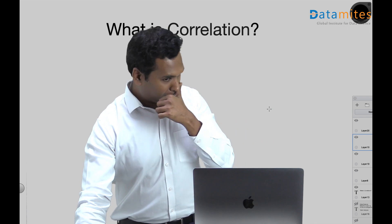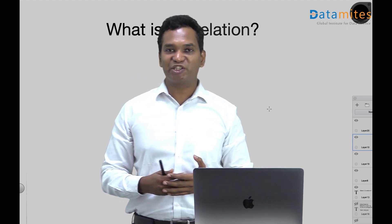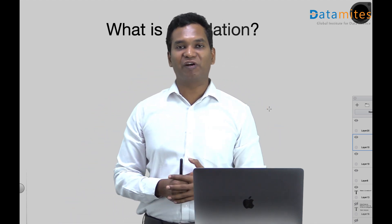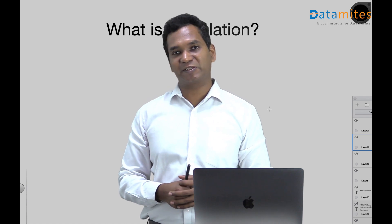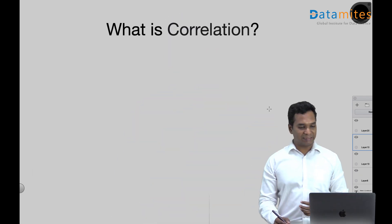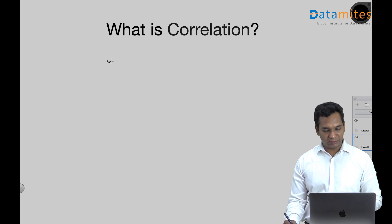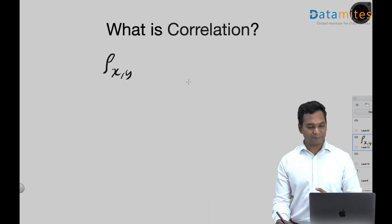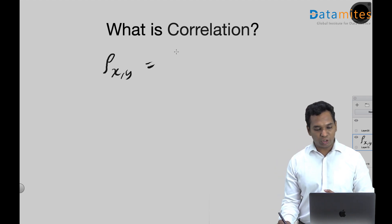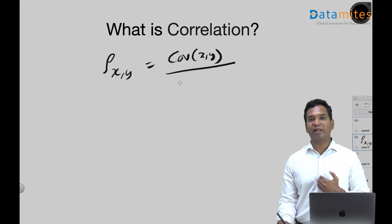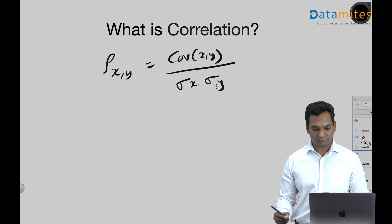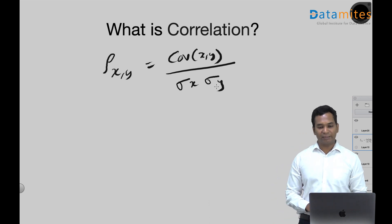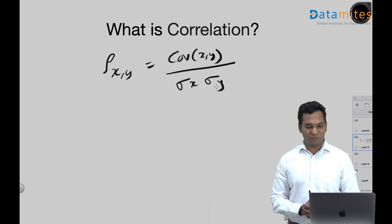So, what is correlation? Correlation coefficient is a measure of relation between two random variables. Mathematically, correlation between x and y, where x and y are two random variables, is given by covariance of x and y divided by the product of their standard deviations. And this is Pearson correlation coefficient.